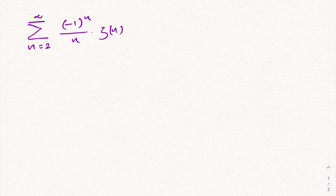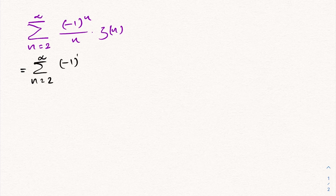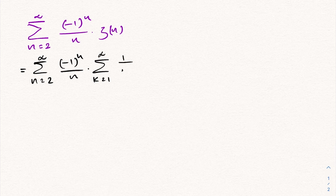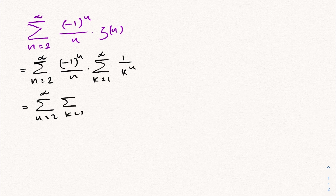First, we know the definition of zeta of n, so we can represent zeta of n as an infinite sum. We write the sum from n equals 2 to infinity of minus 1 to the n, over n times zeta of n, where zeta of n is represented as the series from k equals 1 to infinity of 1 over k to the n. Then we simplify to a double sum: n equals 2 to infinity, k equals 1 to infinity, of minus 1 to the n over n times k to the n.